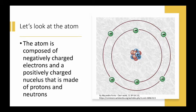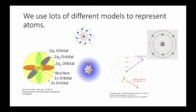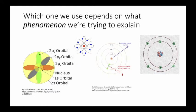Now let's look at the atom. The atom is composed of negatively charged electrons and a positively charged nucleus that's made of protons and neutrons. We use a lot of different models to represent atoms. Which one we use depends on what phenomenon we're trying to explain. They don't really look like what the atom looks like, but that's not really the point.